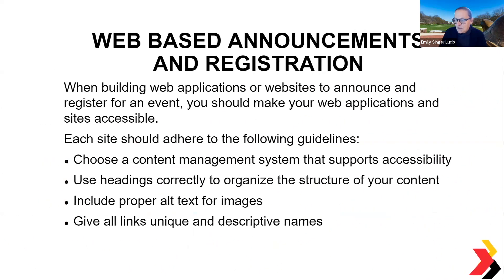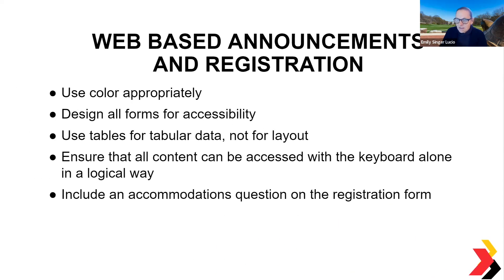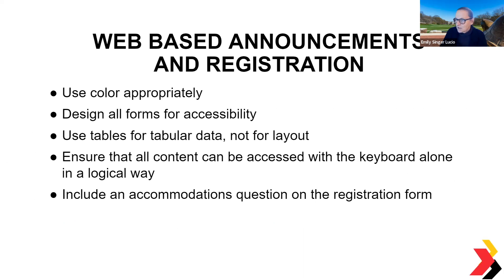For web-based announcements and registrations, when building websites to announce and register for an event, choose a content management system that supports accessibility, use headings correctly to organize the structure of your content, include proper alt text for images, and give all links unique and descriptive names. Use color appropriately, design all forms for accessibility, use tables for tabular data not for layout, ensure all content can be accessed with a keyboard alone in a logical way, and include the accommodations question on the registration form.